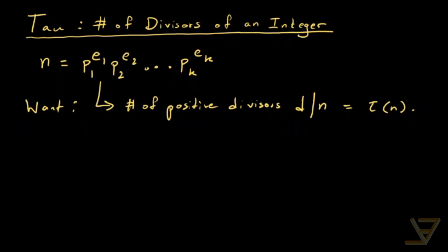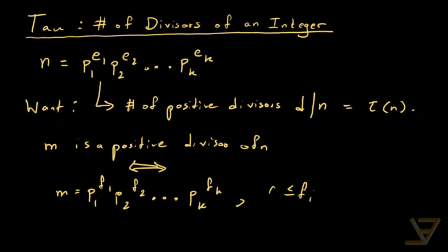Now, we're going to need a lemma, which is not difficult to prove. And that lemma states that m is a positive divisor of n if and only if a certain condition holds. And that condition is that m equals p1 to the f1, p2 to the f2, all the way through to pk to the fk, where each fi satisfies that it's between 0 and ei inclusive.